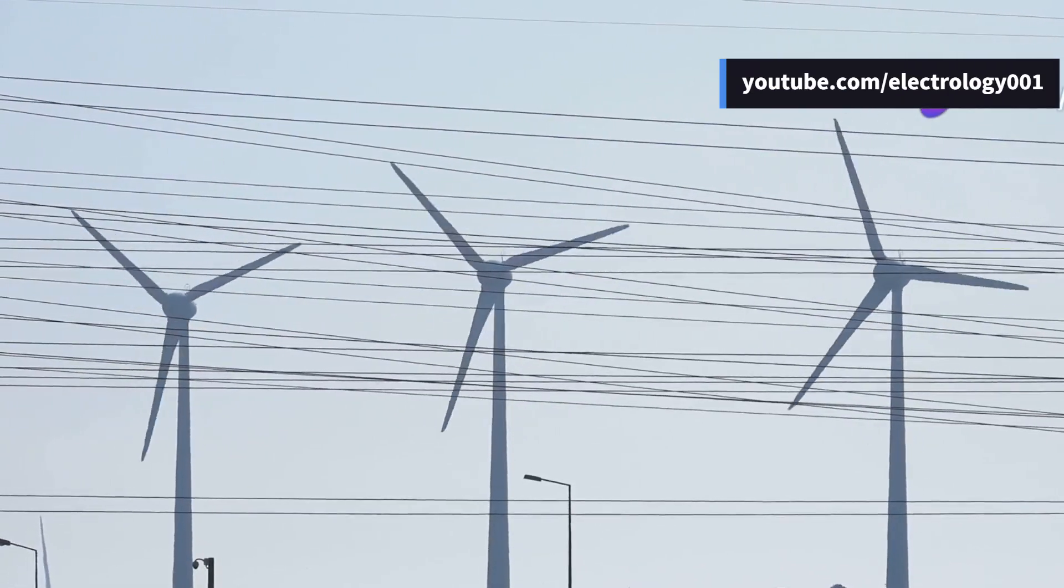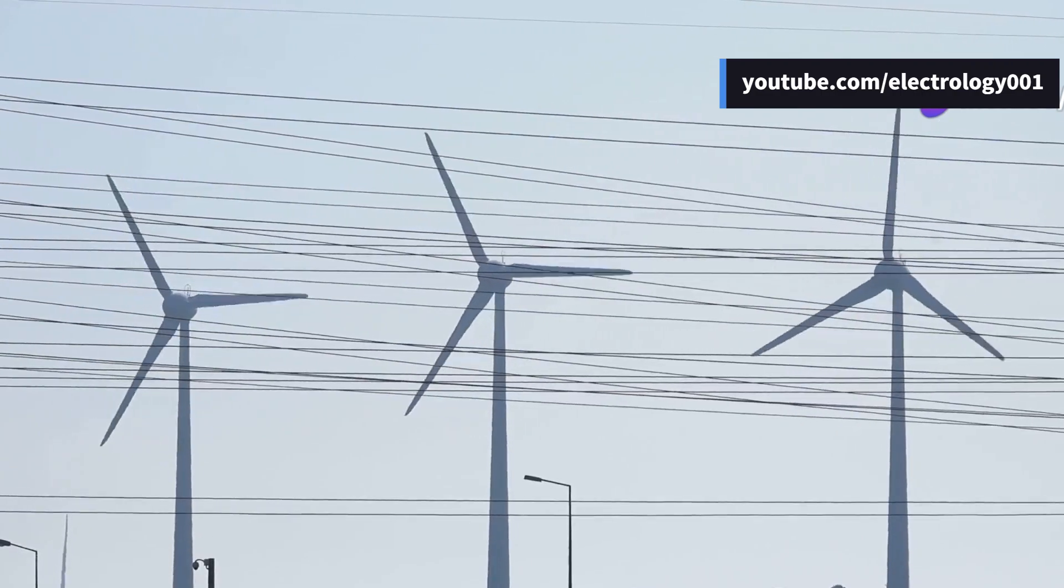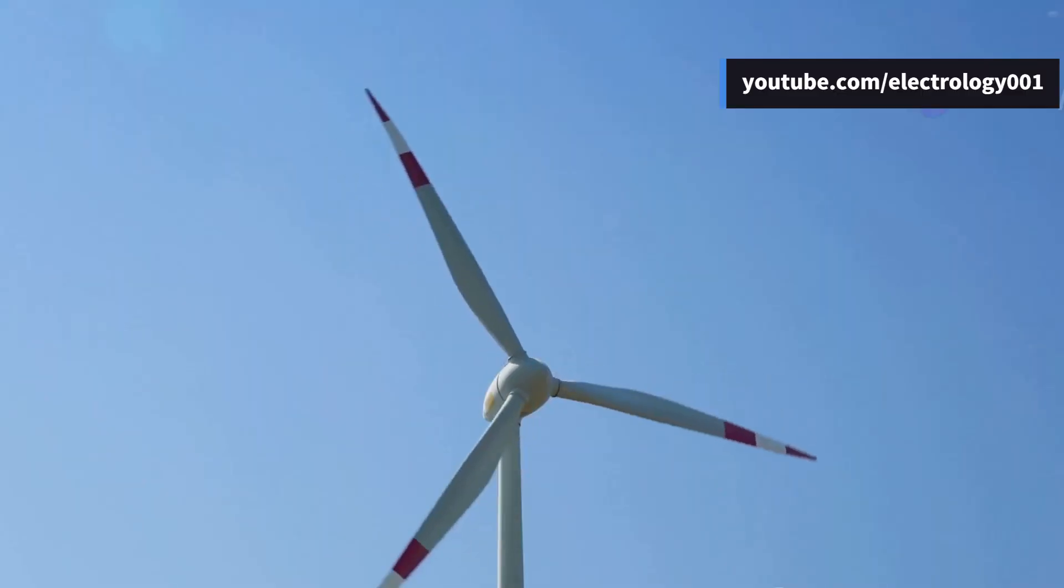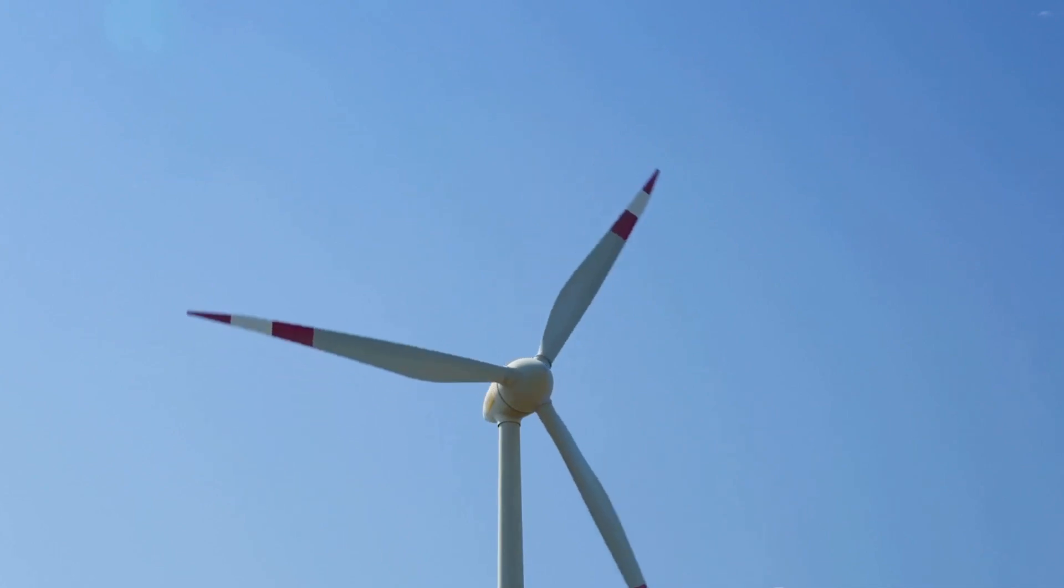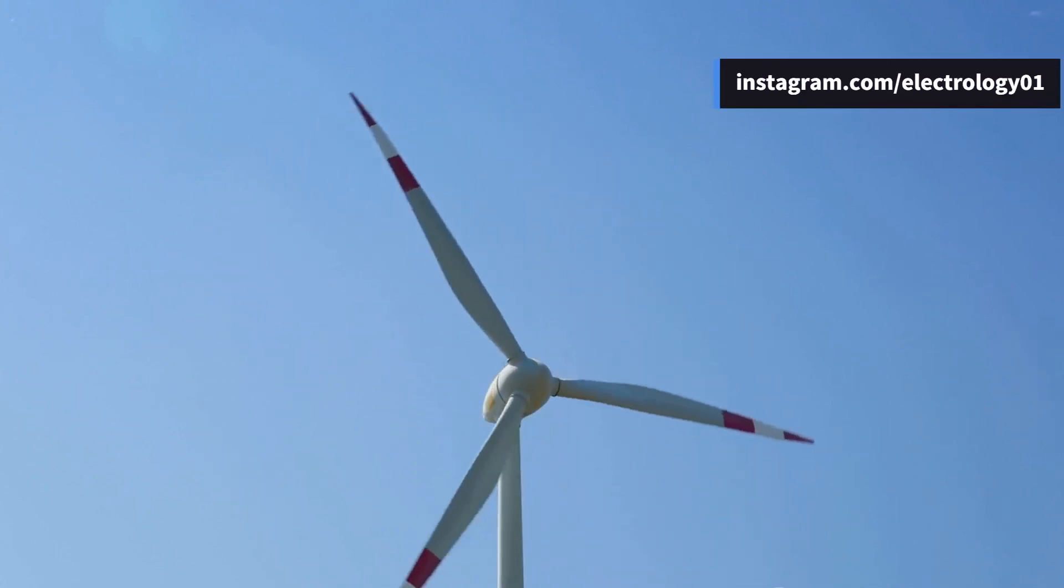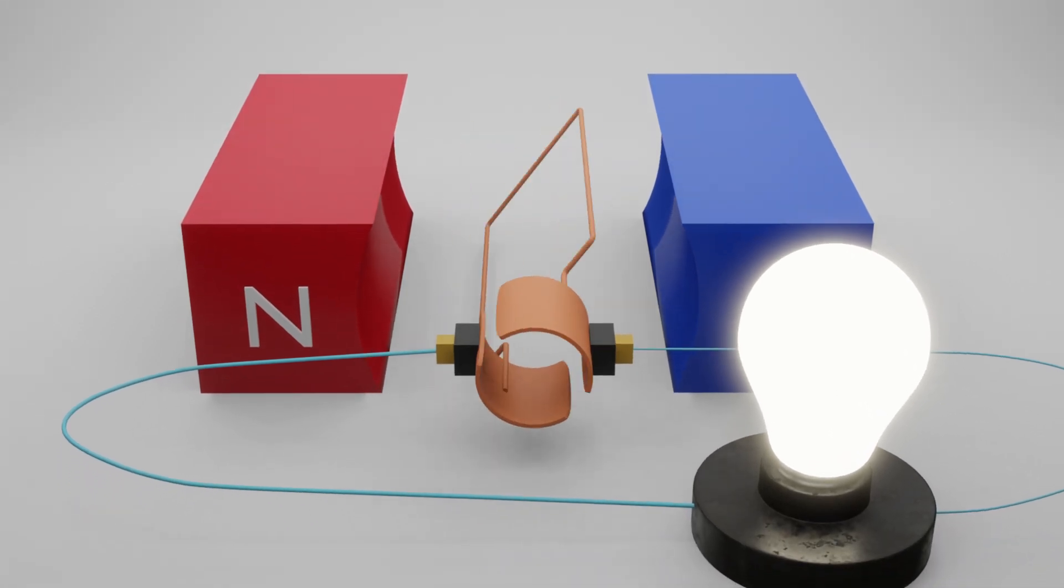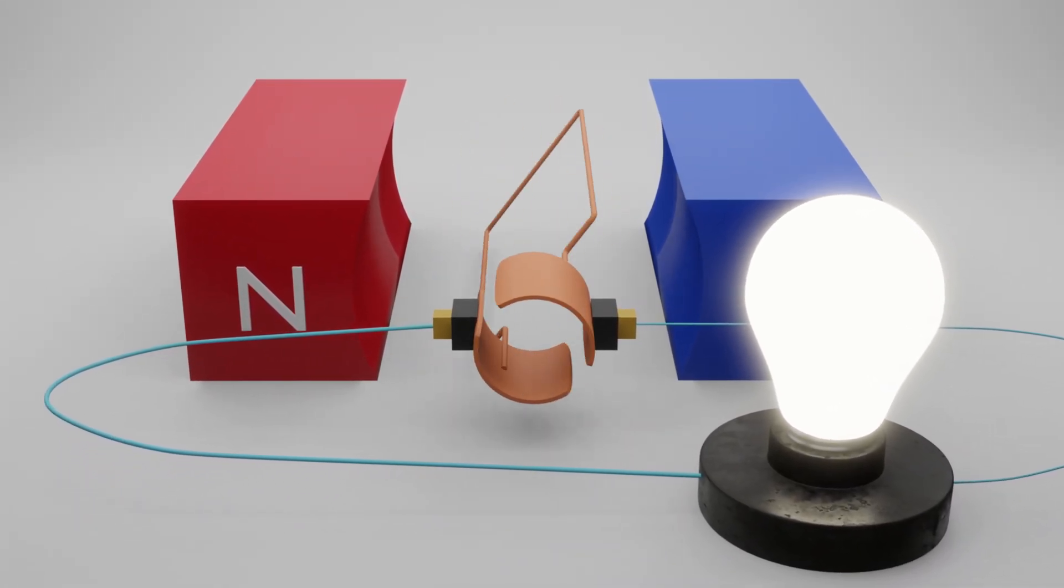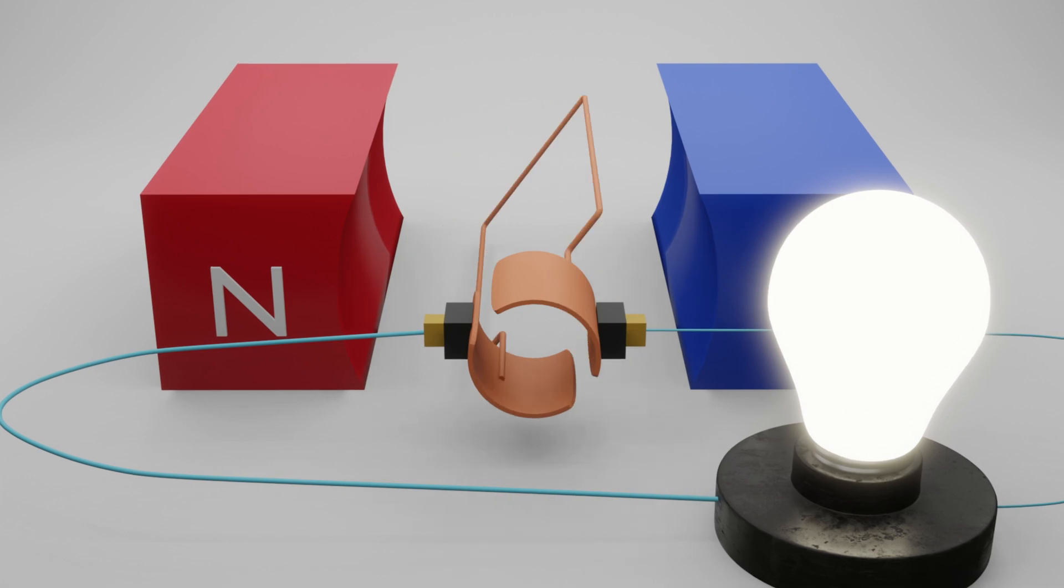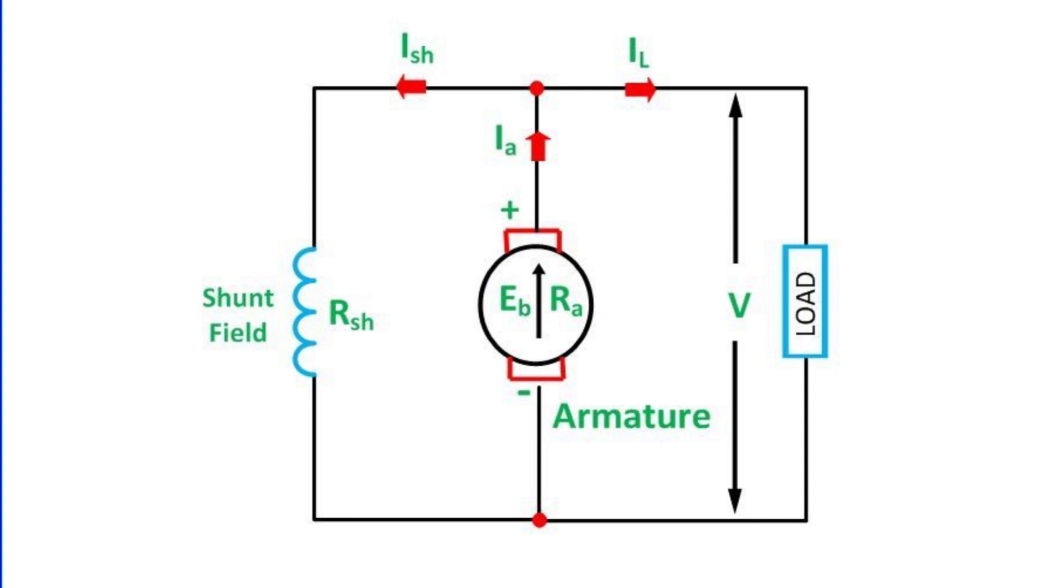Have you ever stopped to ponder the secret ingredient that ensures the reliable operation of a DC generator? It all boils down to a critical factor known as critical field resistance. Imagine a generator as a delicate balancing act where the magnetic field strength determines the output voltage. Critical field resistance acts as the crucial tipping point in this balance. It's the precise resistance value that separates a generator's ability to build up voltage from its inability to do so.